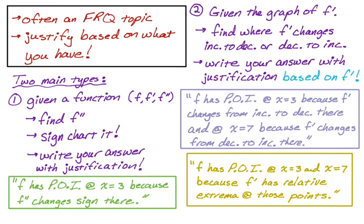The things in the boxes — the bottom three boxes — are basically templates that you're going to use for your justifications. Knowing those going in means you can just rattle them off as soon as you've done the work. I'm going to do one example where I have a function, and then another one where we look at the graph of f prime. Let's do the function first.